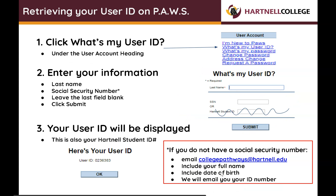Retrieving your user ID on PAWS. Click "What's My User ID" under the User Account heading. Enter your information like your last name and social security number, and leave the last field blank. Then click Submit. Your user ID will be displayed — this is also your Hartnell student ID number.